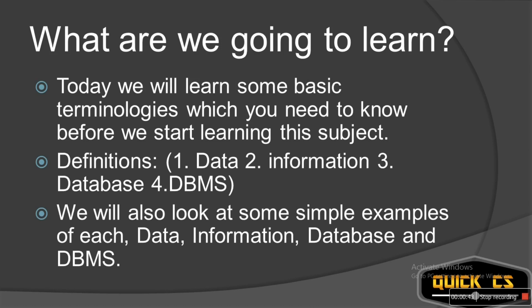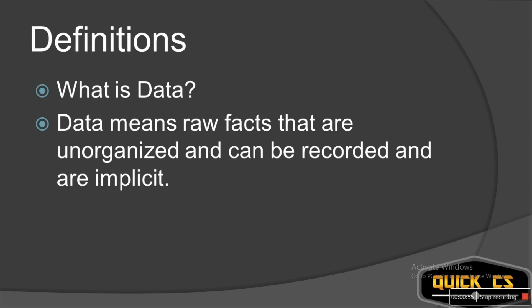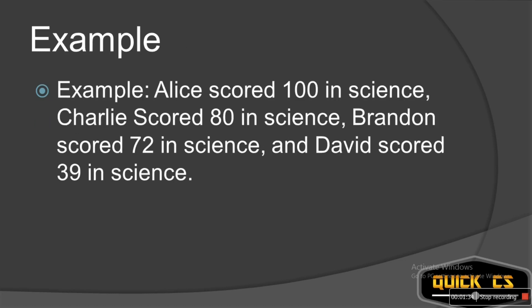So what is data? Data means some raw facts that are unorganized, can be recorded, and are implicit. Here is an example: Ellie scored 100 in science, Charlie scored 80 in science, Brandon scored 72 in science, and David scored 39 in science. This is just raw, unorganized facts — that is data.